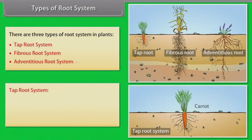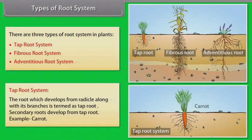Tap root system: The root which develops from the radicle along with its branches is termed as tap root. Secondary roots develop from the tap root. Example: carrot.